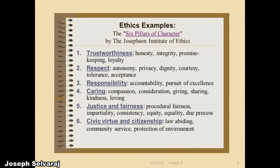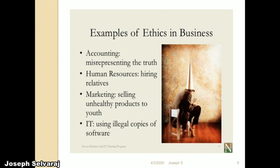Third is responsibility: if any task is given to us, we have the responsibility to do it. A main important thing is accountability — we are accountable for what we are doing. The fourth is caring, the fifth is justice and fairness, and the sixth is civic virtue and citizenship. In the first unit, we will discuss deeply about human values in ethics. Examples of ethics in business include accounting and misrepresenting the truth, which will be discussed in the work ethics topic later.